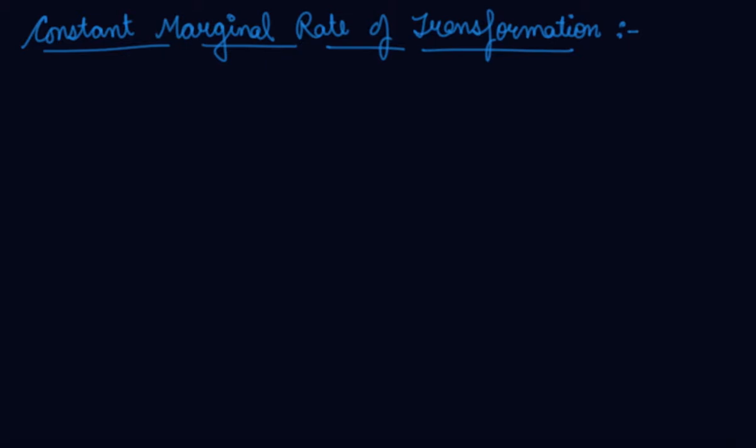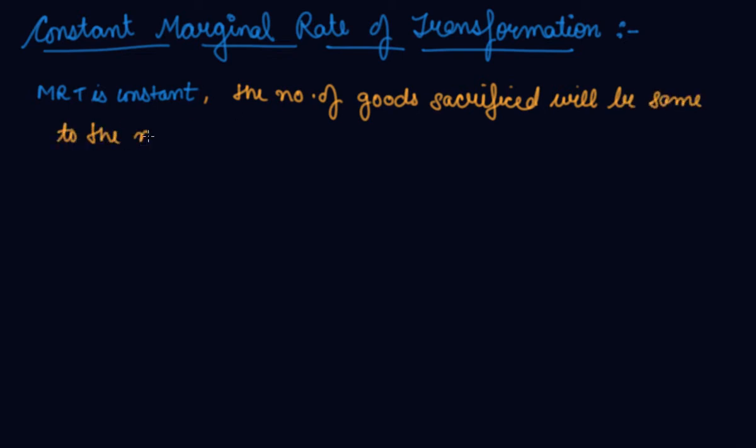The constant marginal rate of transformation. Now what is MRT is constant? Which means, if MRT is constant, that every time the society requires to produce one more unit of a good, the number of units of the other good to be sacrificed is the same. The number of goods sacrificed will be the same as the number of goods obtained.